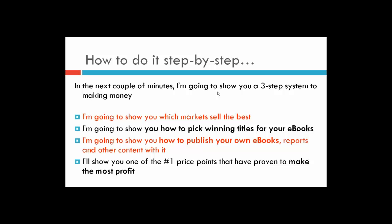I'm going to show you how to pick winning titles for your books. We've now got this down to a science — there's some really cool ninja stuff we can do to the titles of our books to outsell everything else in the same category on the Amazon store. I'll also show you how to publish your books, the websites you need to use, and the number one price point that right now is proving to convert really well and make a lot of money. My promise is that by the end of tonight you'll have enough information to have a book up on Amazon — probably within 72 hours.